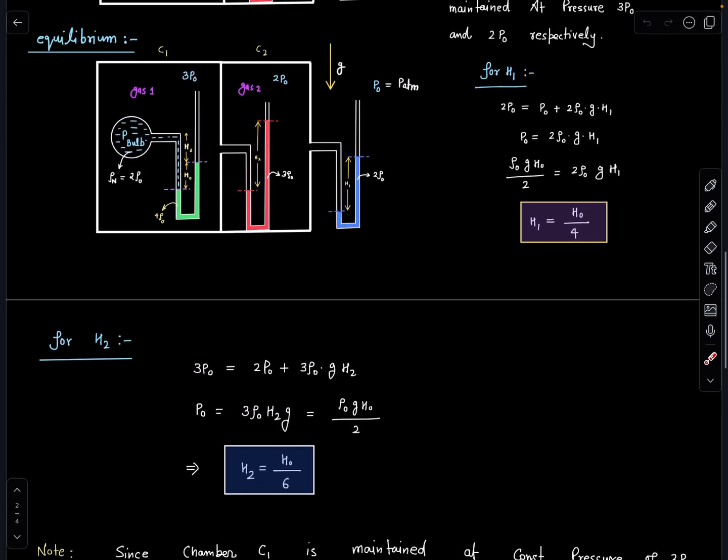Now similarly for h2 we can write, now in this chamber pressure is 2p naught. So 2p naught plus 3 rho naught g h2, this is going to be the balancing equation here and if we simplify, p naught is 3 rho naught g h2.